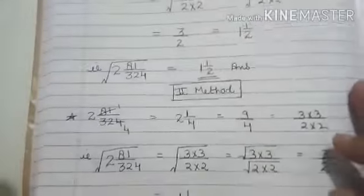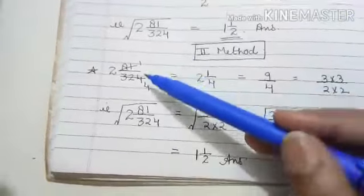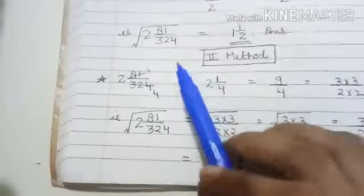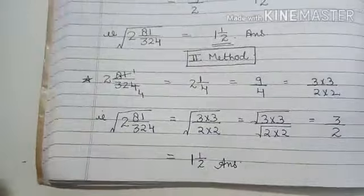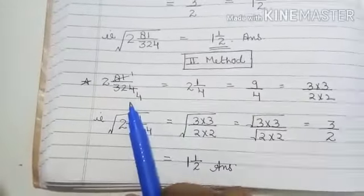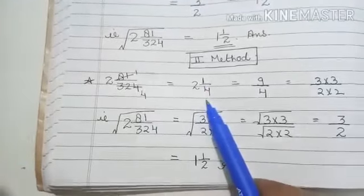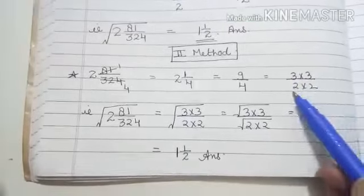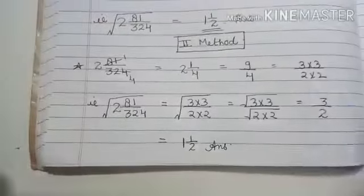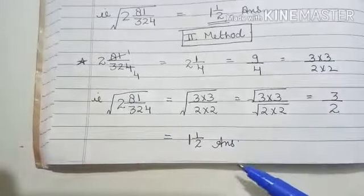Class, see, this is one method. One more method - what you can do, if you are able to recognize in the question that 81 and 324 can be divided, means this is 81 by 4, so your question becomes very simple. If you reduce it in the starting, when you reduce it, you get 1 by 4 here, so this will be 2 whole 1 by 4. When you multiply, you get 9 by 4. This is 3 times 3 and the denominator is 2 by 2. Just an oral question and you can directly write 3 by 2, which is 1 whole 1 by 2, class.